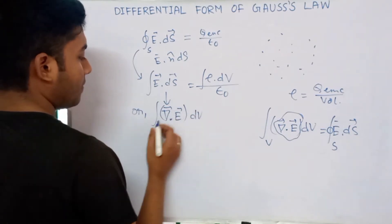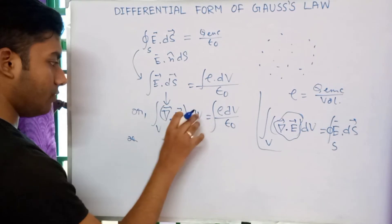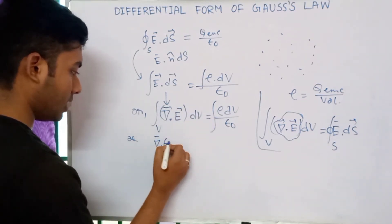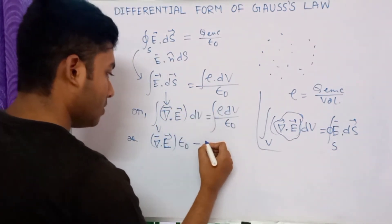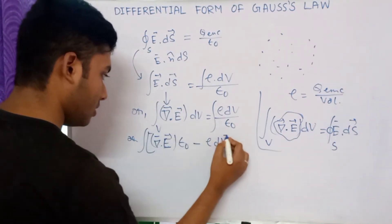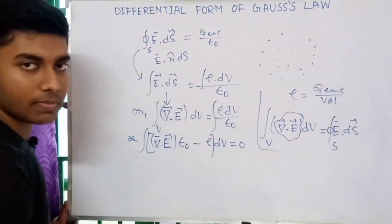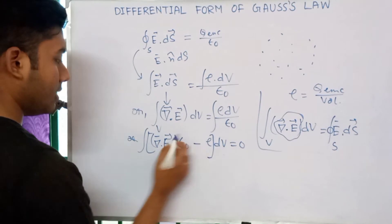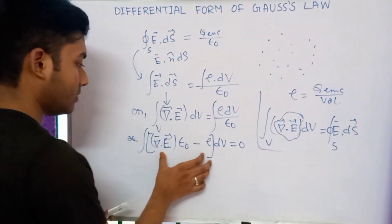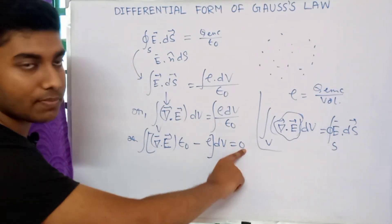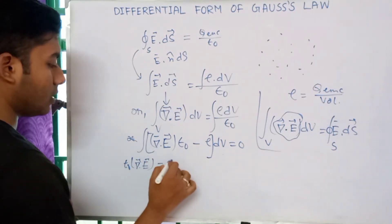The volume integral of del dot E into dV equals the integral of rho dV divided by epsilon naught. Rearranging, we get the integral of (del dot E times epsilon naught minus rho) dV equals zero. Since the volume element dV cannot be zero, the quantity inside must equal zero.